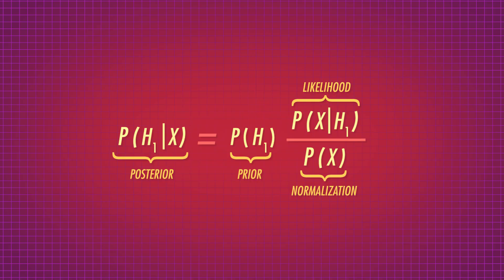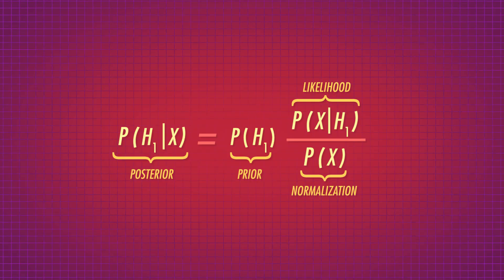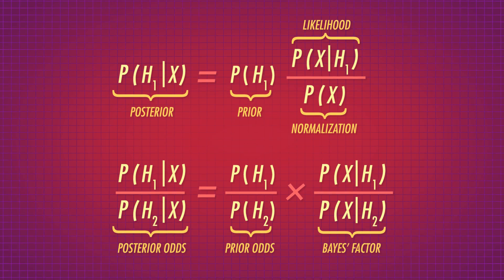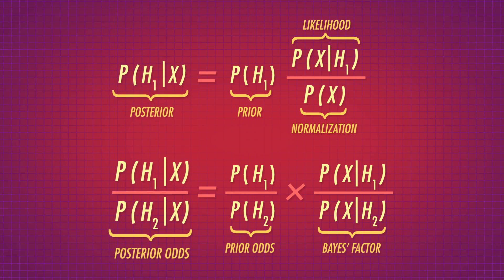The ideas behind continuous and discrete Bayesian inference are exactly the same. We take our prior beliefs — what we believe before we've seen new evidence — and update it with the likelihood of our evidence. This is called the Bayes factor when comparing two models. Once we've updated, our new beliefs are called our posterior beliefs. If we're comparing two models, they're called our posterior odds. But instead of simple discrete probabilities, we have probability distributions.